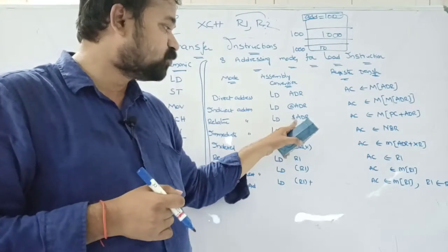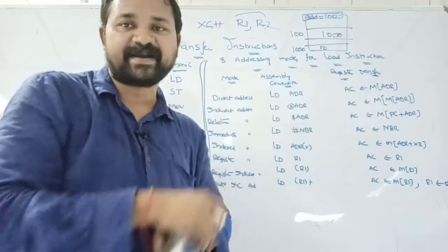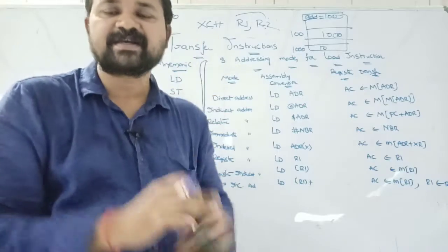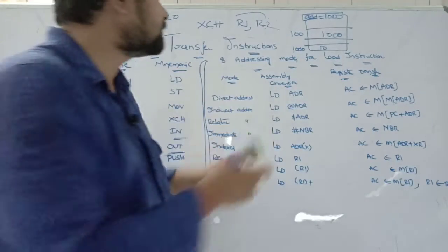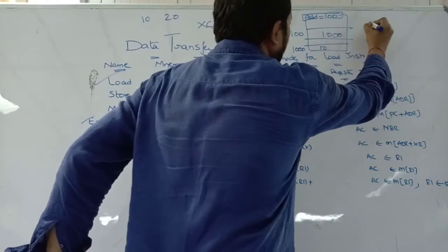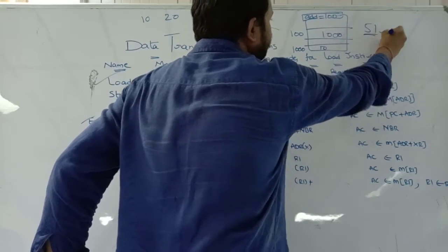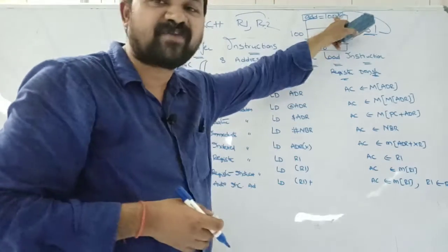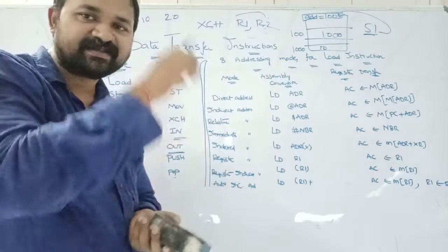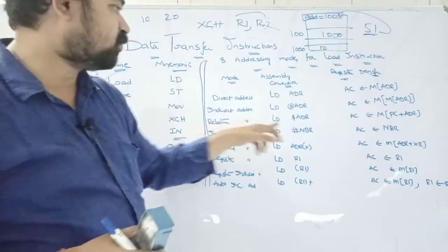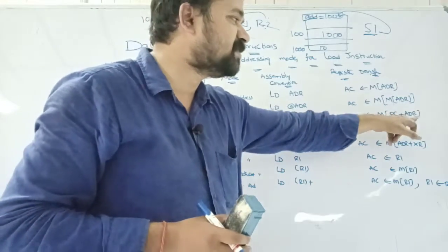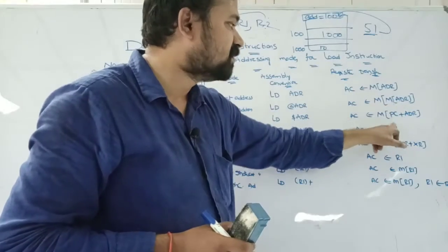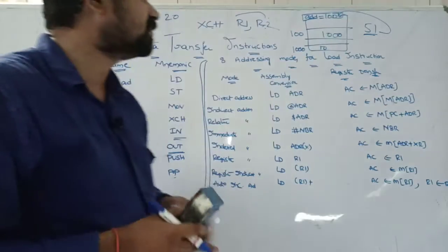Relative addressing mode uses the '$' (dollar) symbol. In relative addressing, the program counter (PC) is added to the address field to determine the effective address. For example, if PC is 51 and the address field is 100, the effective address is 151. In register transfer form this is written as 'AC ← M[PC + ADR]'. We go to that effective address location to find the operand.